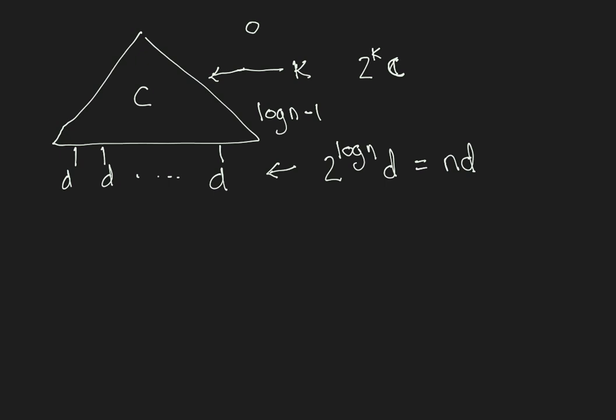So, the sum of all the values in the tree is equal to the value at the leaves plus the value at the non-leaves. We already know the value of the leaves is n times d. What is the value of the non-leaves?